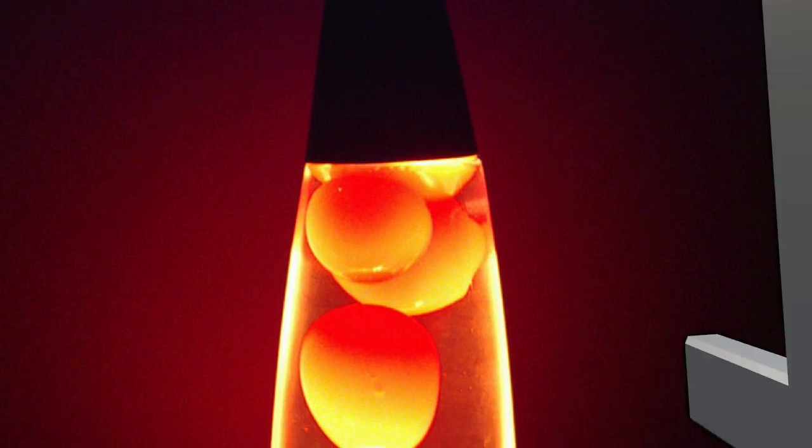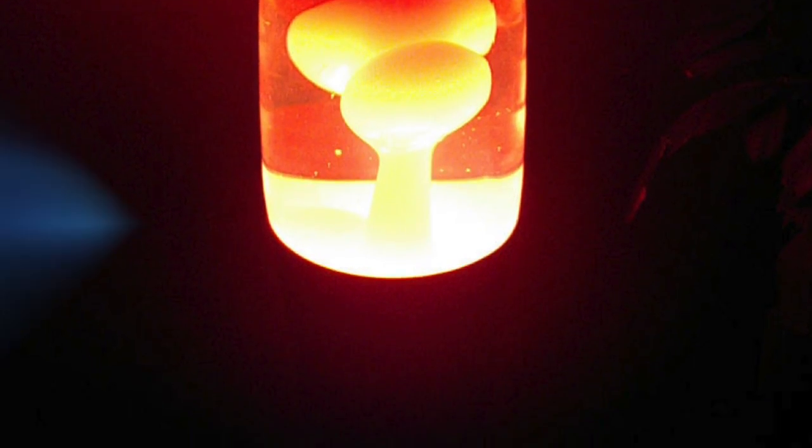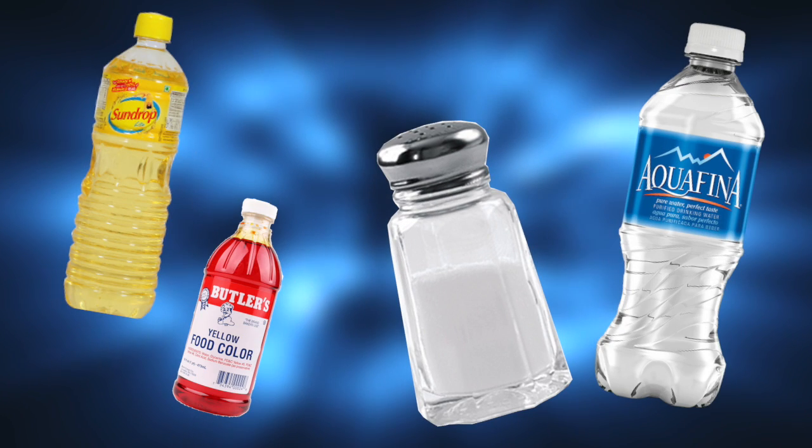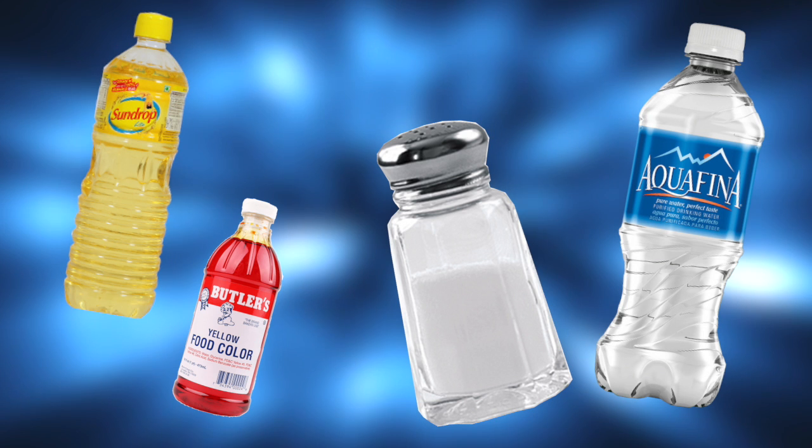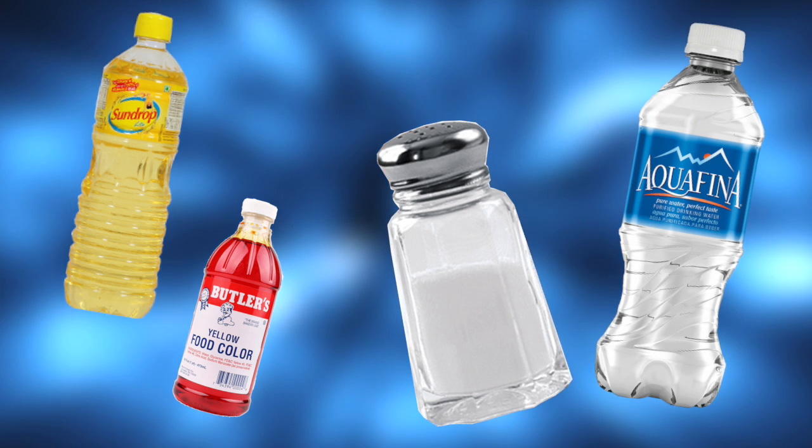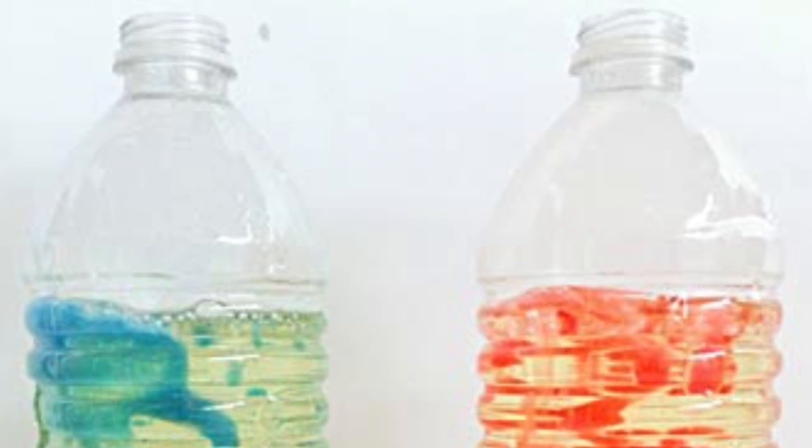Next up we have lava lamp. Lava lamps are awesome, but they can cost quite a bit of money. But with a few household items and a little creativity, you can create your own at home for free. You're only going to need four things: water, salt, vegetable oil, and food coloring. Pour some water into a glass and then put in some food coloring.